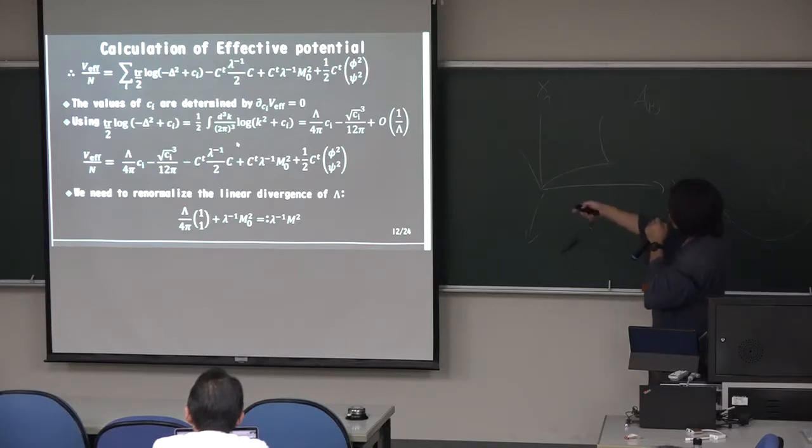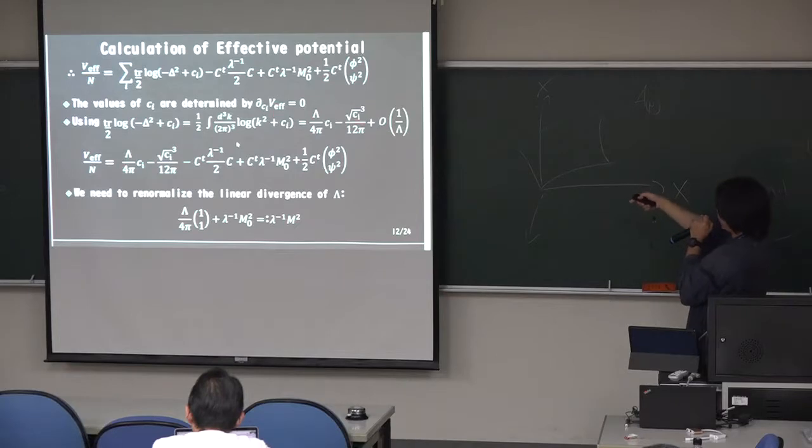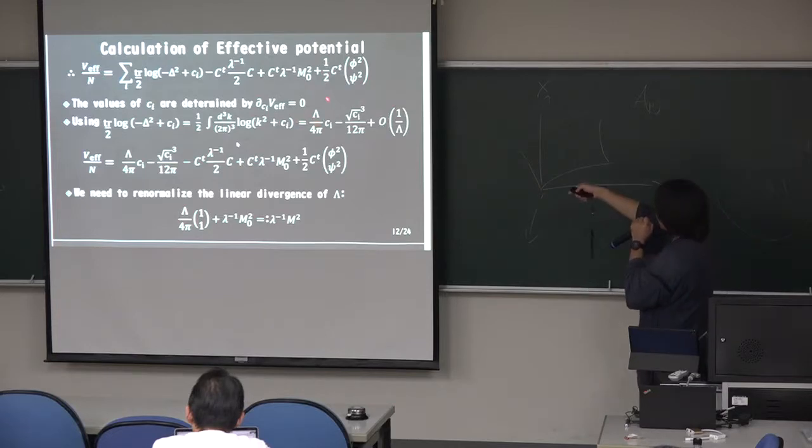Okay. In three dimensions, this expression is universal in four dimensions, three dimensions. Dimension dependent four. And in three dimensions, this term, trace log minus delta square plus CI is more like this, momentum integral. And we execute the integration. We get this. We use cutoff regularization, Lambda. Okay.